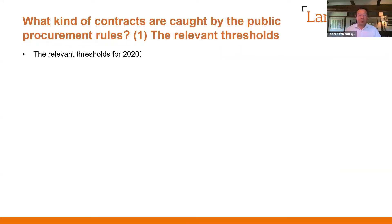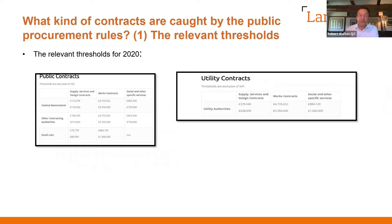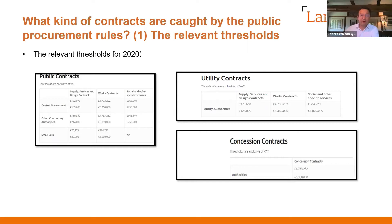What kind of contracts are caught? Here are the relevant thresholds dealing with public contracts, utility contracts and concession contracts. These come from the European Commission and have been increased on the back of two years of exchange rate variation. Looking at the central column of the public contracts thresholds under works contracts, the figure of £4,700,000 is the headline figure in terms of works contracts across the board.